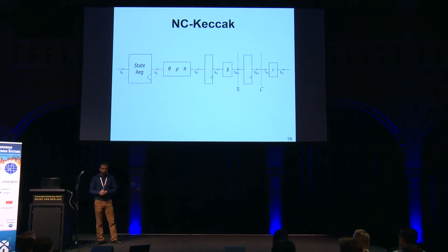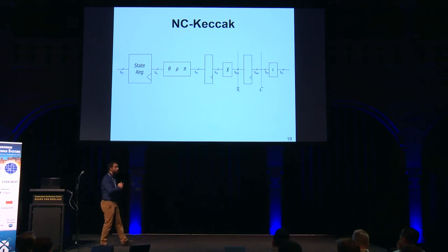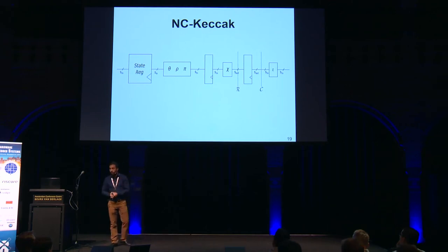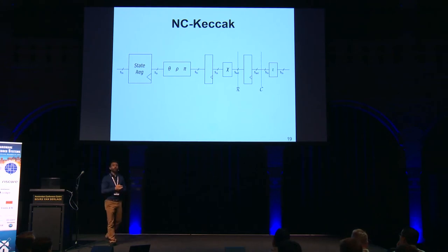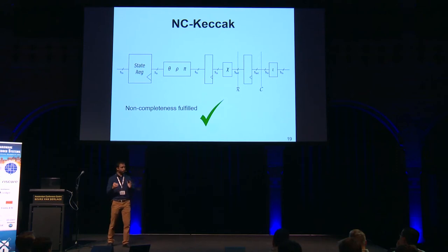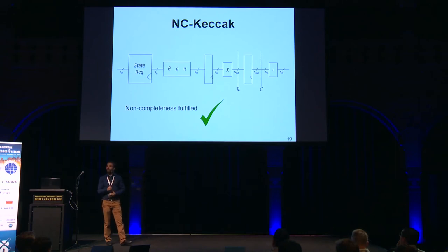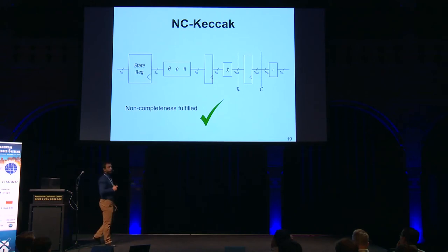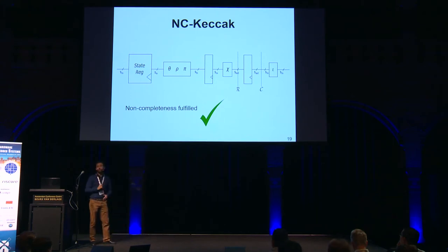So we propose a fix. We introduce a layer of registers in the middle of the linear permutations and the non-linear permutation. This breaks the dependencies created by the complex theta operation and ensures non-completeness is fulfilled. Running our tool confirms that non-completeness is now satisfied. Since we added a new register layer, we then tried to optimize by merging the state register and this new layer of registers to reduce the latency impact.